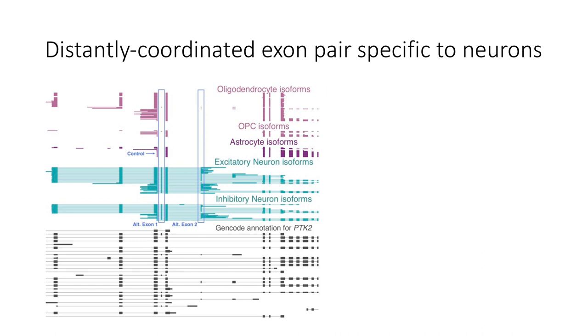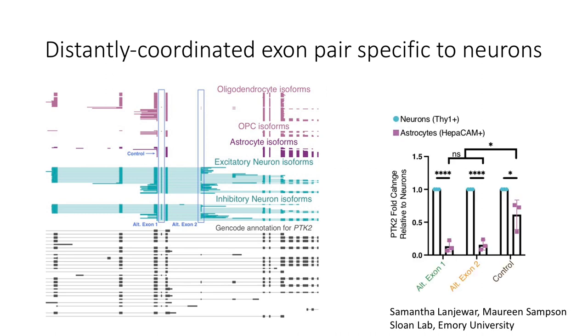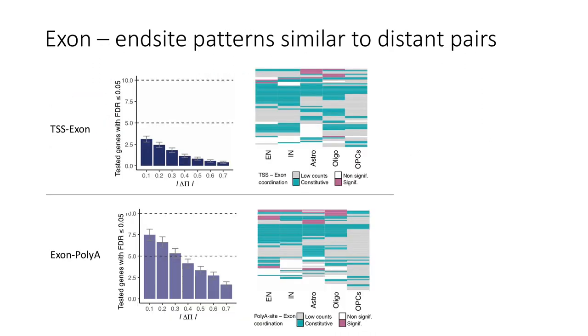So here's an example, again these are autism associated exons which are distant and they're coordinated overall, but when you look at neuronal cell types they're always included and when you look at glial cell types they're always excluded, and we validated this using qPCR.